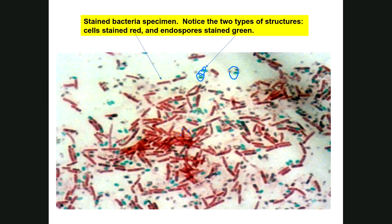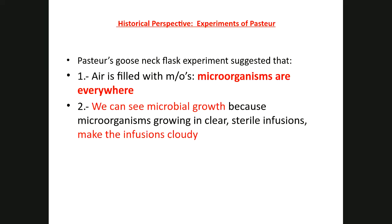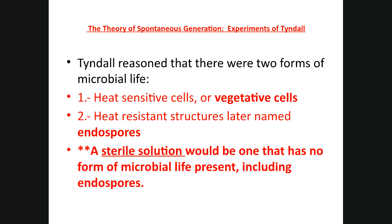A student asks: for the theory of spontaneous generation — was the first form called heat-sensitive or vegetative cells? The vegetative cell is the living, normal cell. The heat-resistant form is the endospore. Keep in mind, this is true of only some bacteria — only some bacteria have the ability to turn into a dormant cell that we call an endospore.